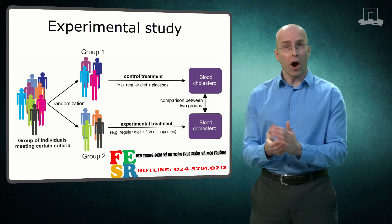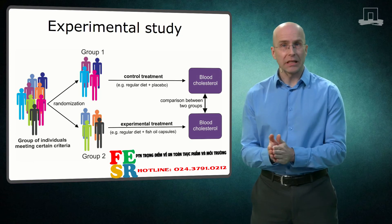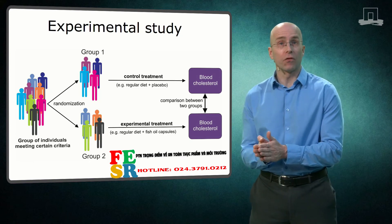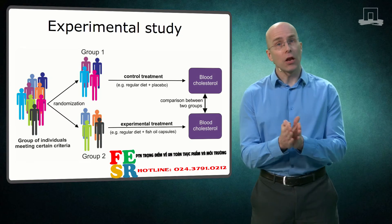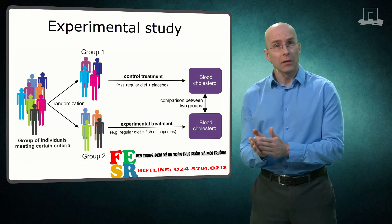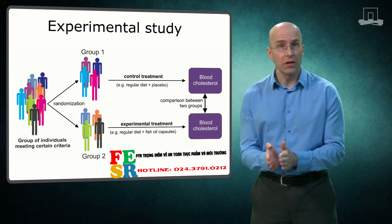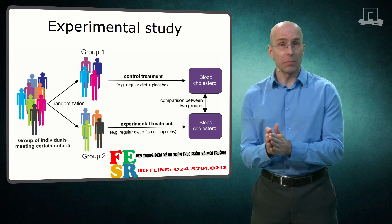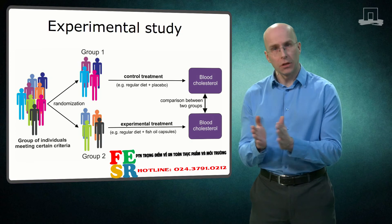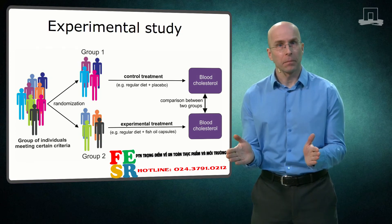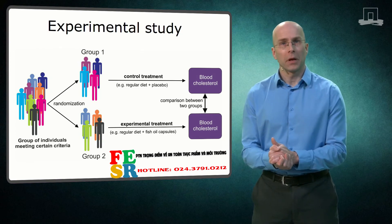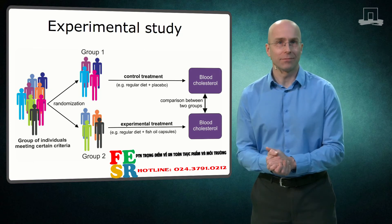In the most powerful study design, all participants get both types of treatment, instead of one group getting treatment A and another group treatment B. In such a study, half of the participants first gets treatment A, followed by treatment B with some time in between, and the other half gets it in the reverse order. This is called a crossover design.